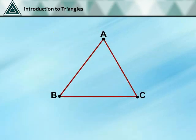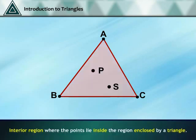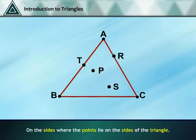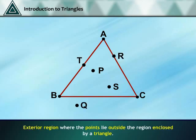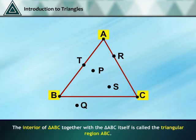In a triangle ABC, there are three parts. The interior region, where points lie inside the region enclosed by the triangle — the interior points are P and S. On the sides, where points lie on the sides of the triangle — points R and T. And the exterior region, where points lie outside the region enclosed by the triangle — exterior point is Q. The interior of triangle ABC, together with the triangle ABC itself, is called the triangular region ABC.